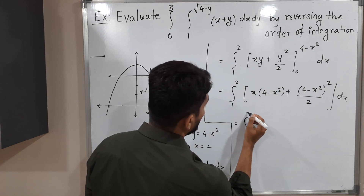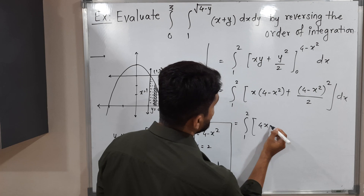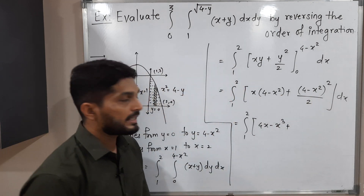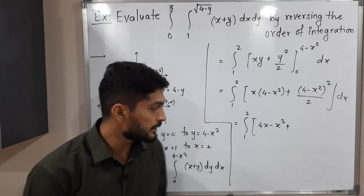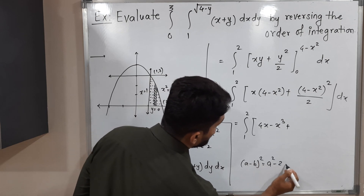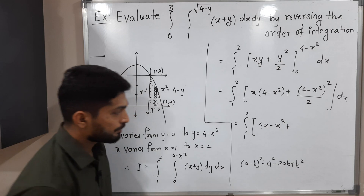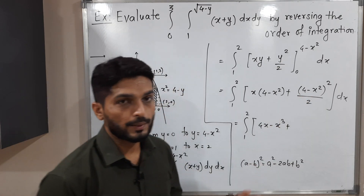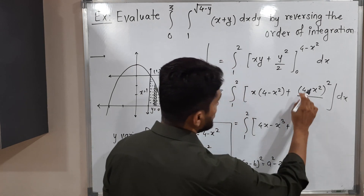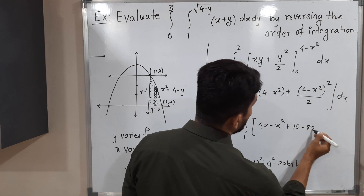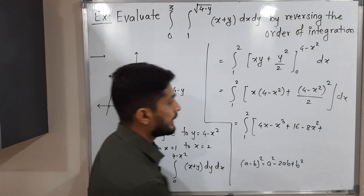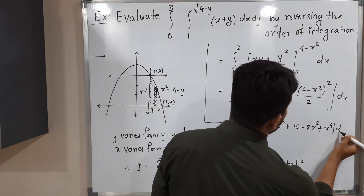Simplifying, this equals the integral from 1 to 2 of: 4x minus x cubed, plus using the (a minus b) squared formula — a squared minus 2ab plus b squared — expanding (4 minus x squared) squared gives 16 minus 8x squared plus x to the 4th, all divided by 2.